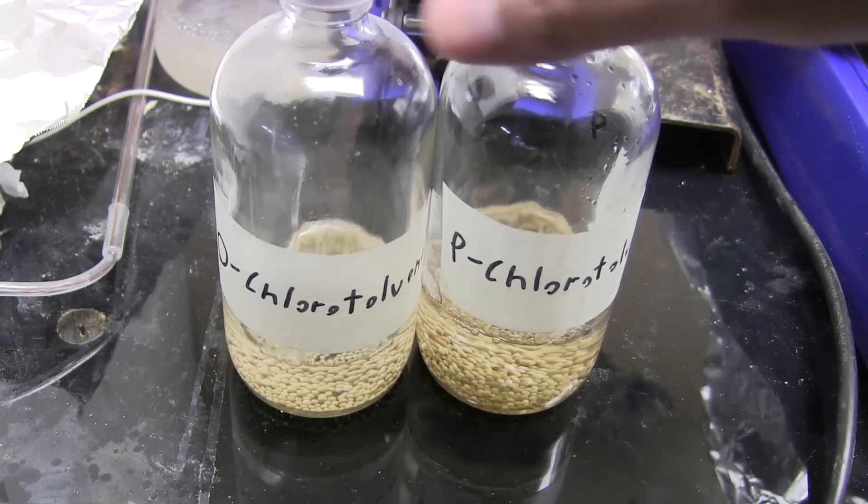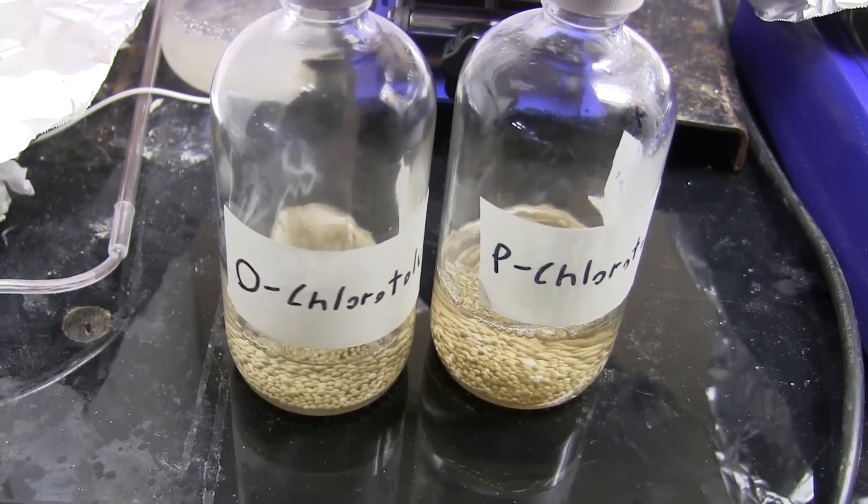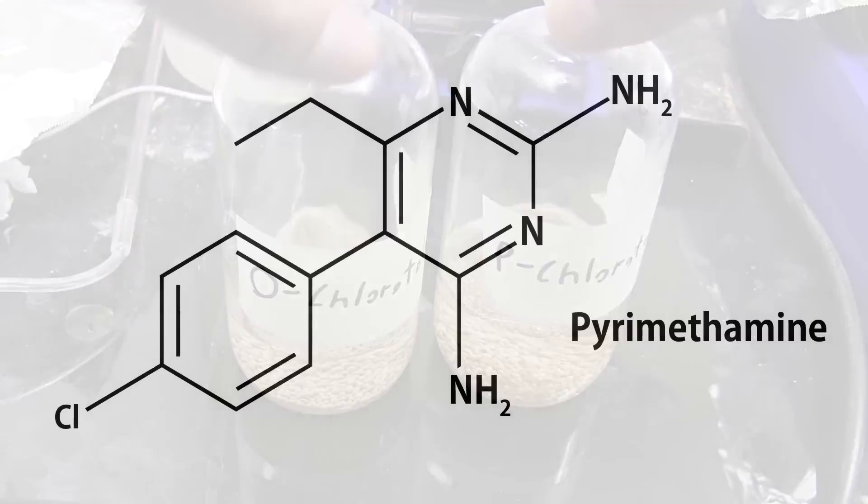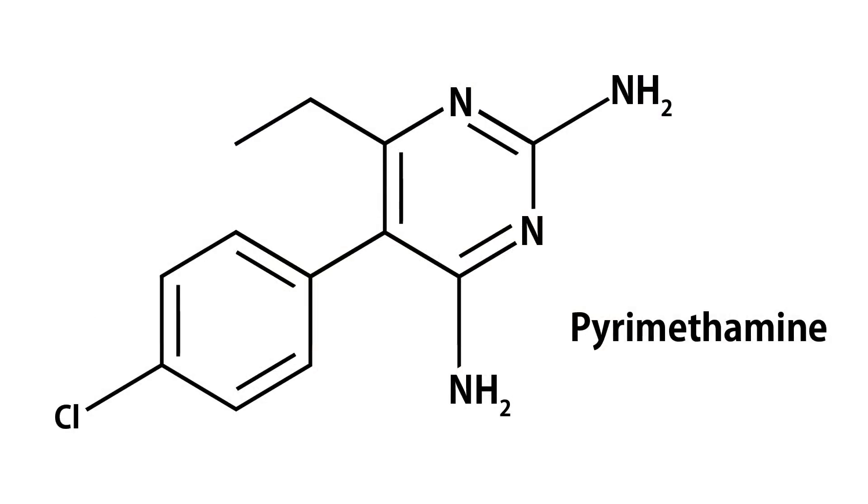Anyway, that is how you use steric effects and sulfonation to separate ortho and parachlorotoluene isomers. This is another step in our synthesis to the antiprotozoal drug pyrimethamine. Thanks for watching.